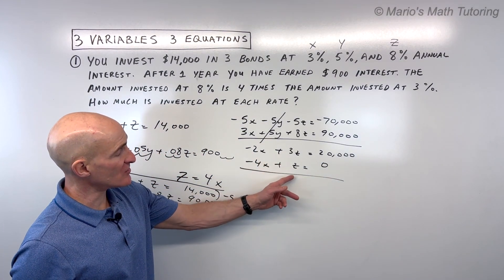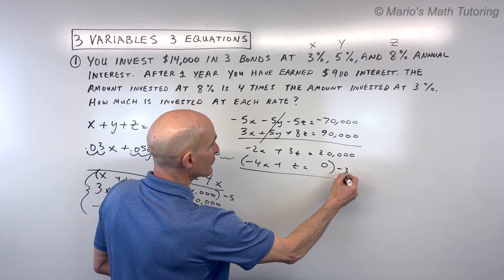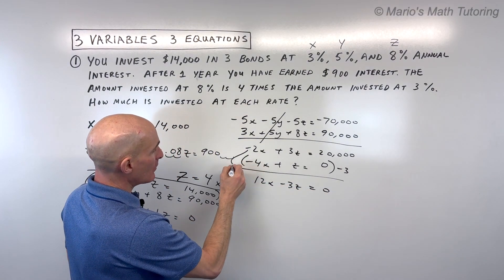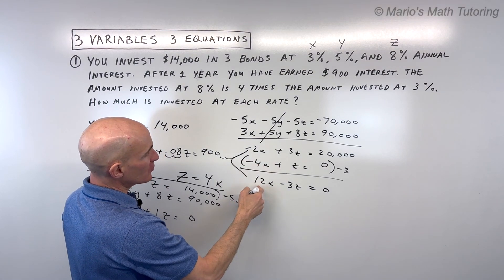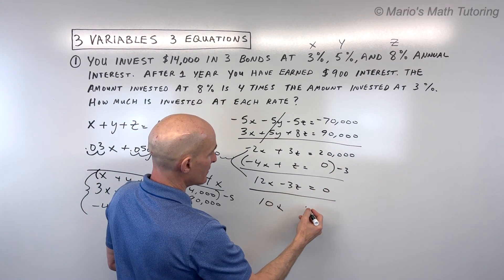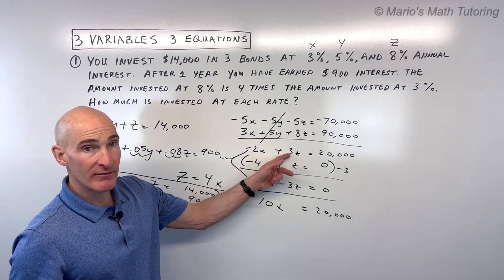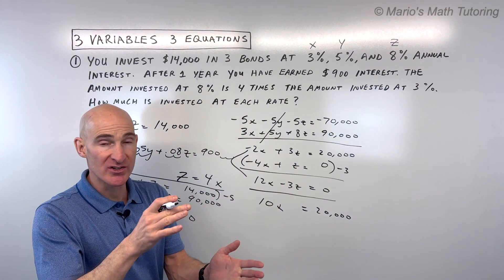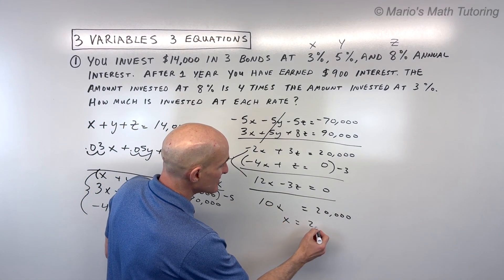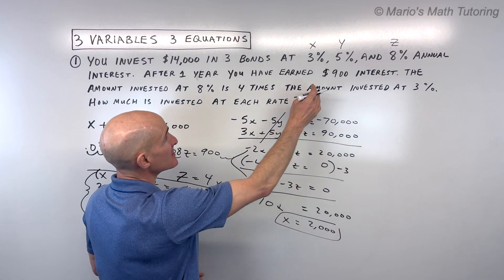To eliminate the Zs, multiply negative 4X plus Z equals 0 by negative 3, giving 12X minus 3Z equals 0. Adding to negative 2X plus 3Z equals 20,000 cancels the Zs, giving 10X equals 20,000. Dividing both sides by 10, X equals 2,000. So $2,000 is invested at 3%.